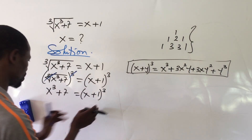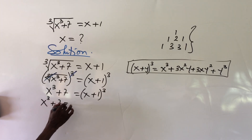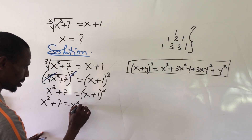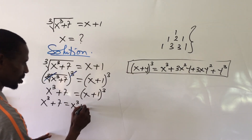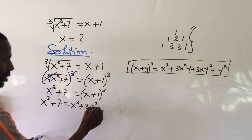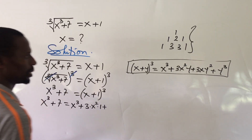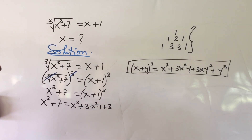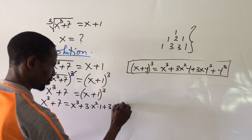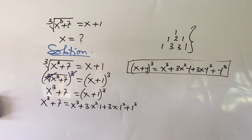Applying this binomial expansion to our equation, we get: x³ + 7 equals x³ plus 3·x²·1 plus 3·x¹·1² plus 1³.